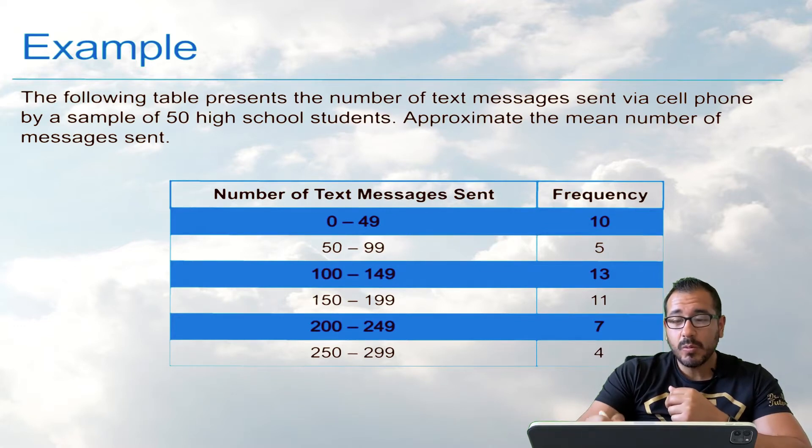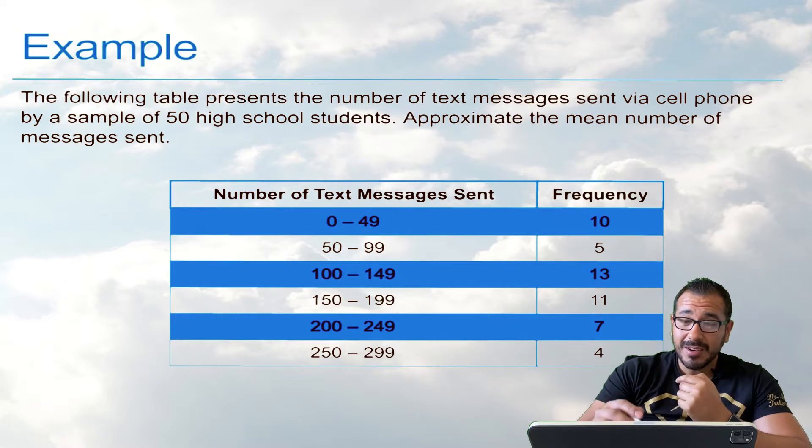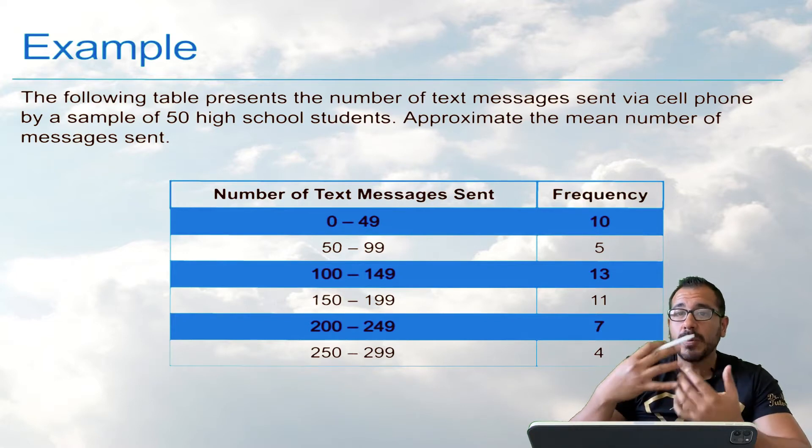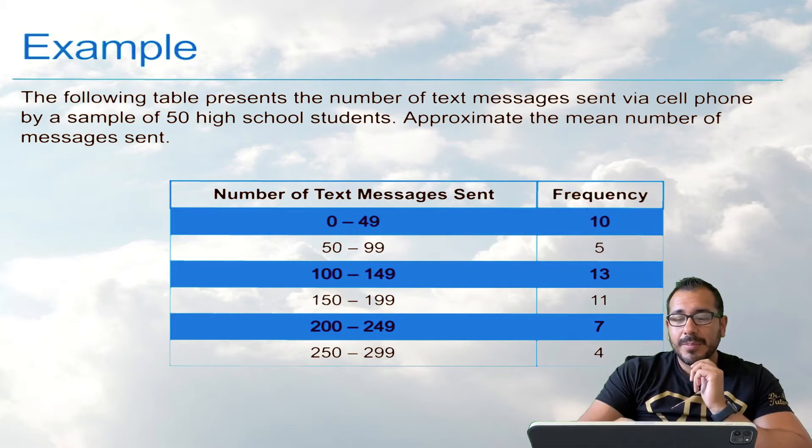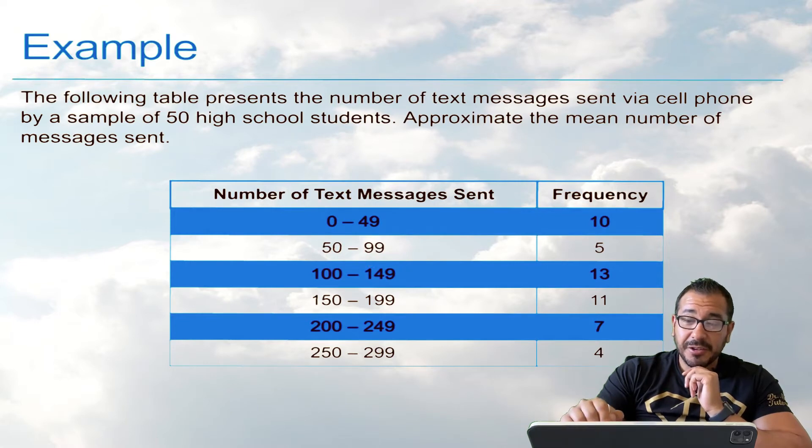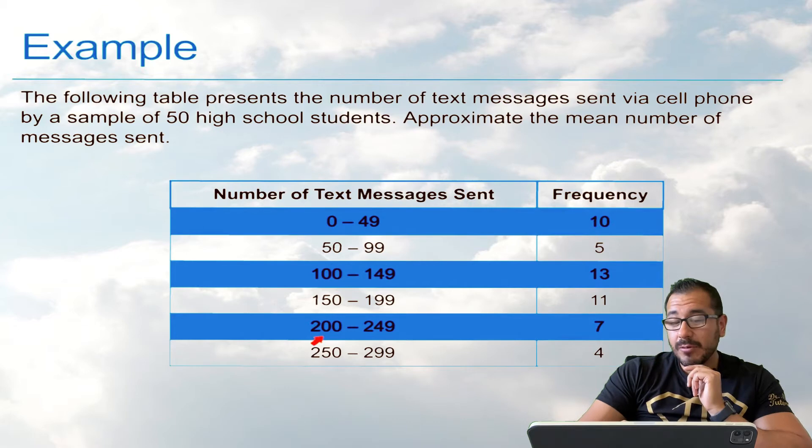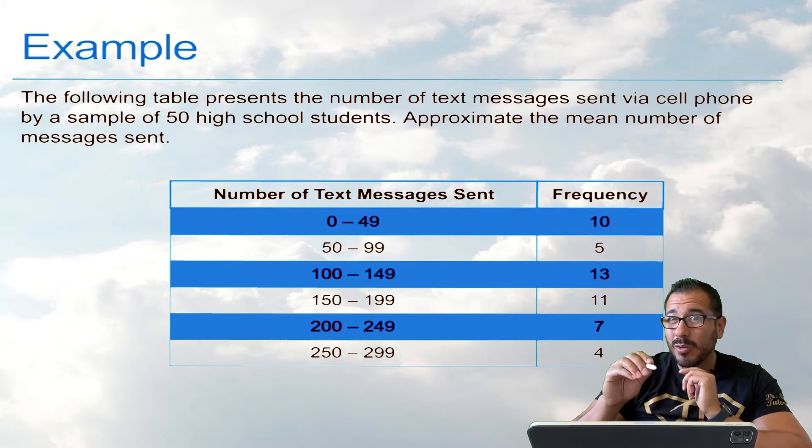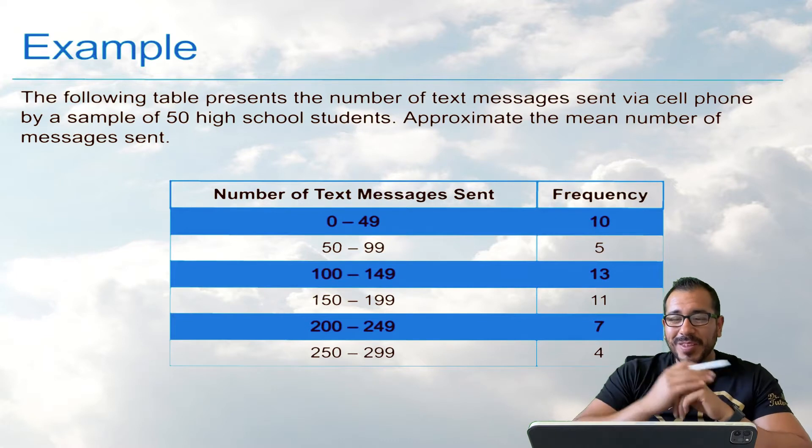All right, so on our left-hand column here, we have the number of text messages sent, right? But notice, they don't give us every single student. They group them all together. So they said, all right, 10 students sent anywhere between 0 and 49 messages. 5 students sent anywhere between 50 and 99 text messages. 13 students sent anywhere between 100 and 149 messages. 11 students sent anywhere from 150 to 199 text messages. 7 students sent anywhere between 200 and 249 text messages. And 4 students should have had their cell phone taken away years ago. All right, so we have all this information.